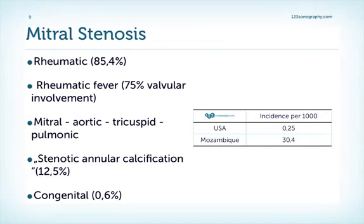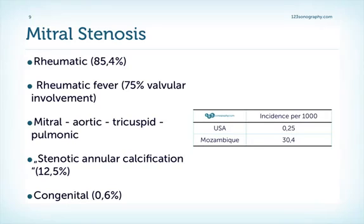First let's take a look at some facts. Mitral stenosis almost always is caused by rheumatic heart disease. Rheumatic fever involves the heart valves in two-thirds of cases and since rheumatic fever varies very much from country to country and continent to continent, we have a large variation in the incidence of mitral stenosis. It is less common in the Western world due to antibiotics, but still fairly prevalent in countries like Mozambique or India.